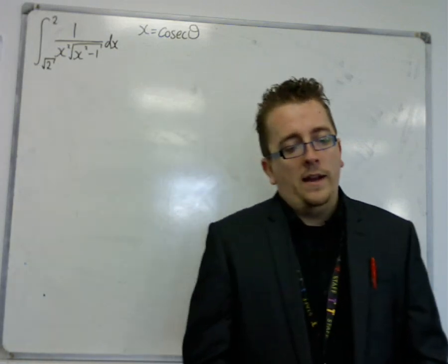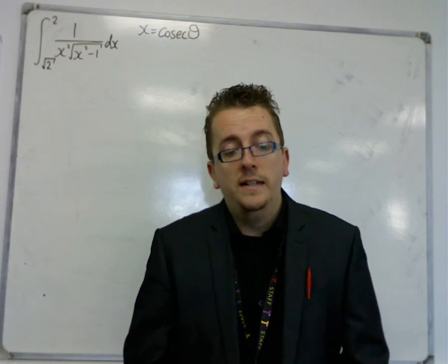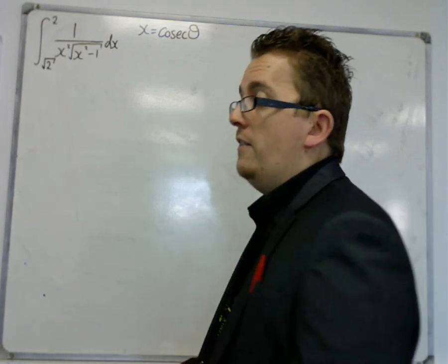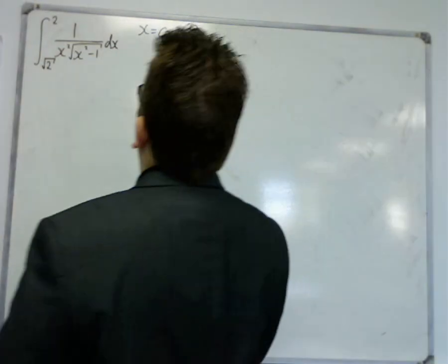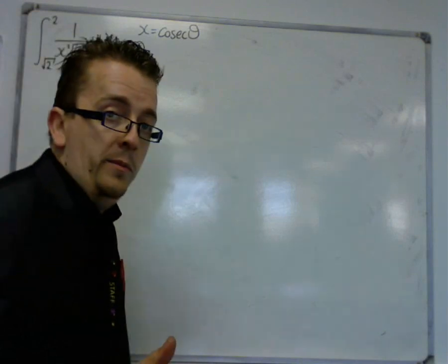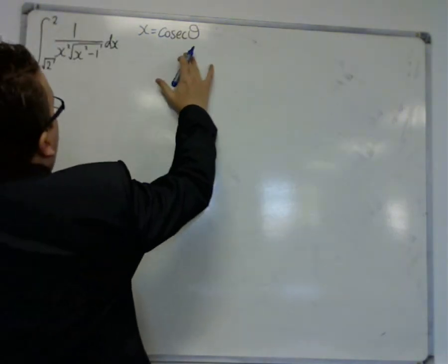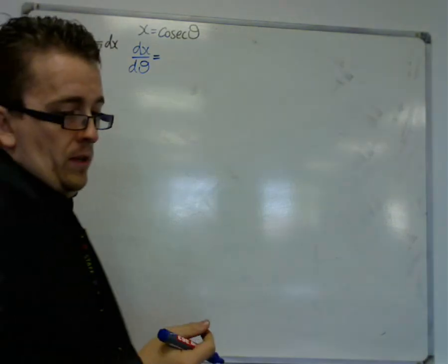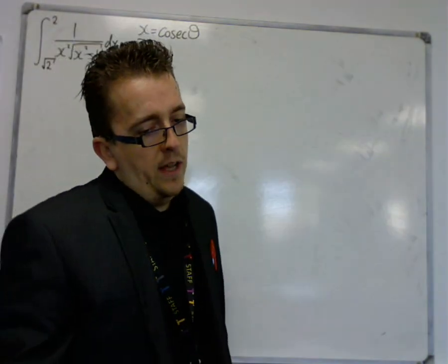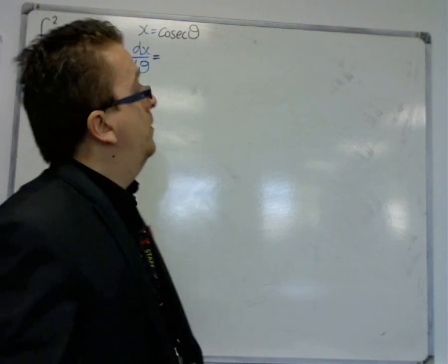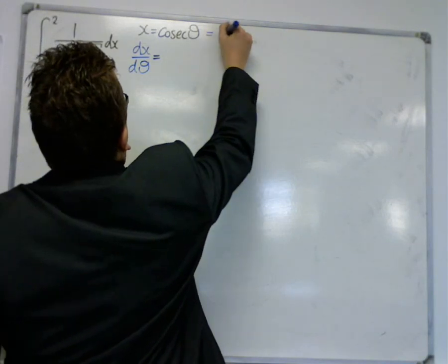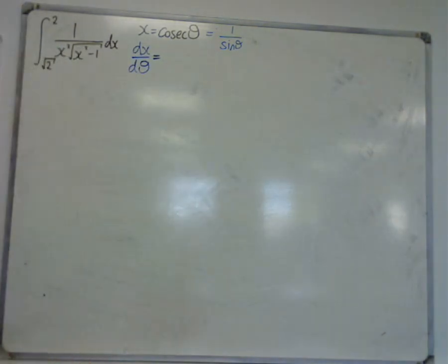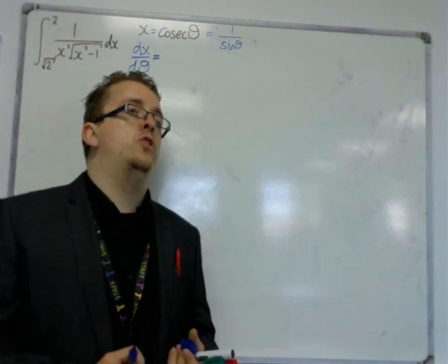And first of all, in this problem, you are asked to show that dx by d theta is minus cosec theta cot theta. So that's what we're going to do first, because whenever we do this, we always start with the substitution, and we find dx by d theta, or du by dx in all those examples that I've been working through. But now, we're making this substitution, so it's actually dx by d theta, okay? So in order to do this, to differentiate cosec, you need to know that cosec is 1 over sine, okay? Now 1 over sine, in order to differentiate that, sorry, we're going to have to use the quotient rule.